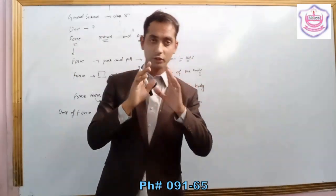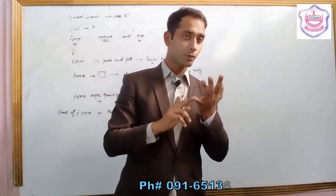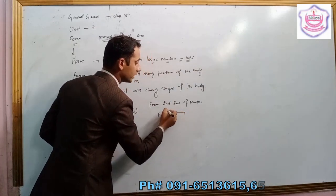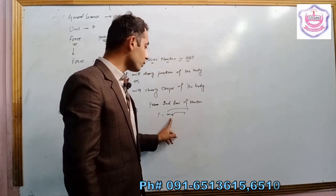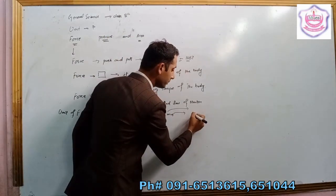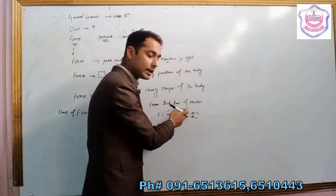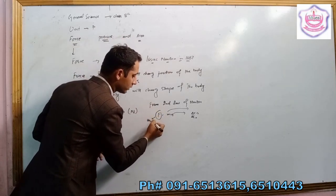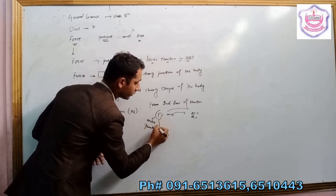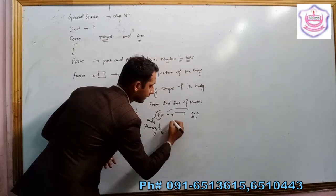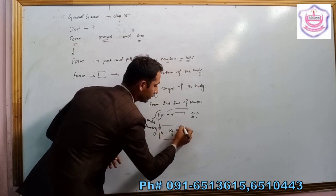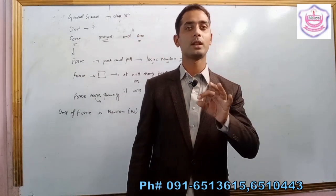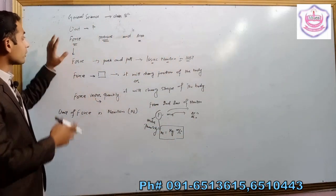From F = ma: when you apply force on a body of specific mass, that force produces acceleration in the body. Force is a vector quantity because acceleration is also a vector — acceleration is delta v by delta t, and since velocity is directional, acceleration is directional too. So force is a vector quantity. The unit of force is Newton: one Newton equals one kilogram meter per second squared.